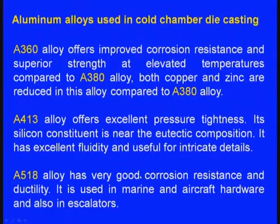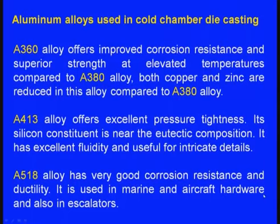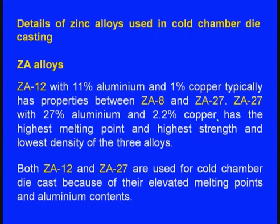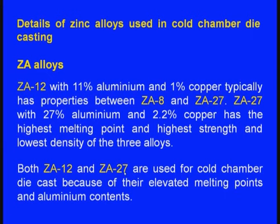A518 alloy has very good corrosion resistance and ductility. It is used in marine and aircraft hardware and also in escalators. For zinc alloys: ZA12 with 11% aluminum and 1% copper has properties between ZA8 and ZA27. ZA27 with 27% aluminum and 2.2% copper has the highest melting point, highest strength, and lowest density of these three alloys. Both ZA12 and ZA27 are used for cold chamber die casting because of their elevated melting points and aluminum contents.